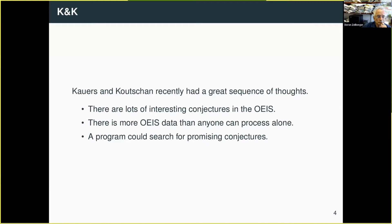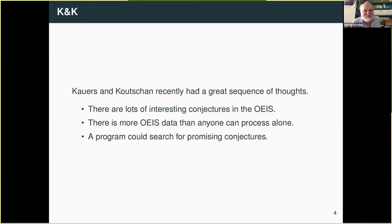They probably know better than most people in the world how useful the OEIS is. There's a lot of data in the OEIS — 350,000 sequences, maybe 360,000 or more. An enormous amount of things you could look at: terms, conjectures people have put in there, comments — a real wealth of information. But there's way more than any person could reasonably understand in one go. Even the team of editors couldn't understand all the possible connections you could be making with different sequences. There's just too much to sit through.